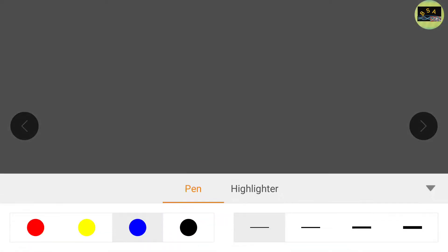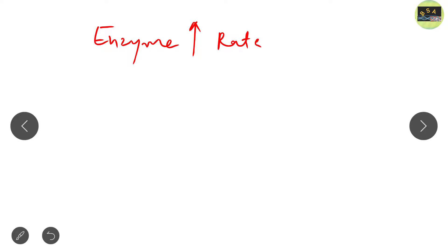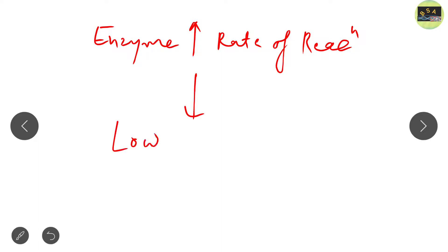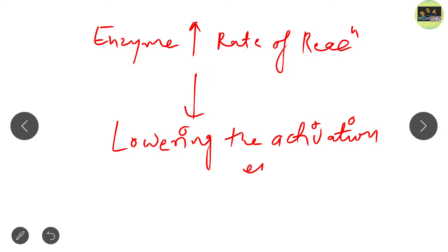Another important point is that enzyme increases the rate of reaction — but how? By lowering the activation energy. So enzyme increases the rate of reaction by lowering the activation energy. I will discuss all these points in detail in our upcoming lectures.